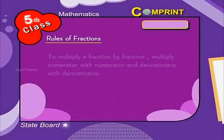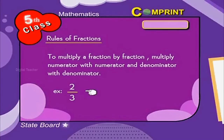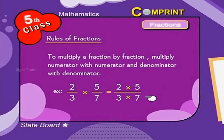To multiply a fraction by a fraction, multiply numerator with numerator and denominator with denominator. Look at the example: 2 by 3 into 5 by 7 is equal to 2 into 5 by 3 into 7, which becomes 10 by 21.